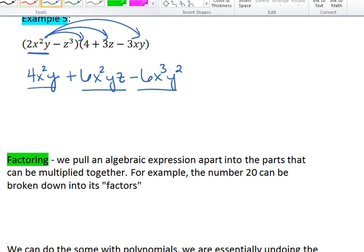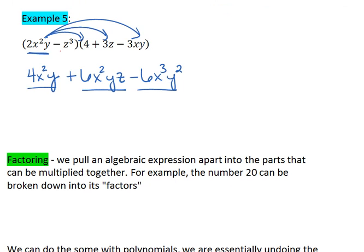We then go through the same process but for the next term in our first polynomial. So we'll take our negative z cubed and multiply that one by every term in the second polynomial. We get negative 4z cubed minus 3z to the 4th plus 3xyz cubed.